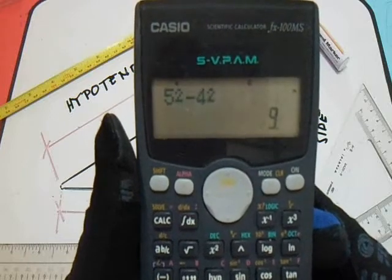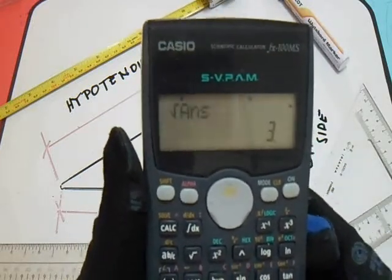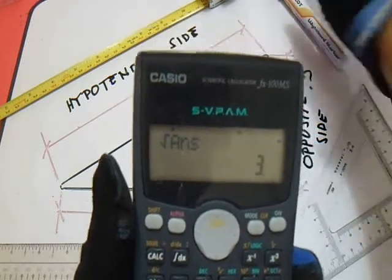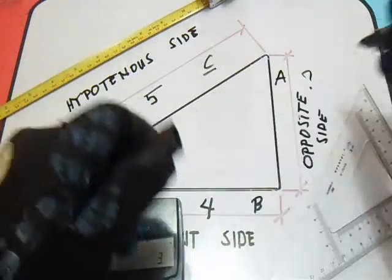Our answer is 9, then square root of 9 equals 3. So our answer here, our opposite side, is 3.